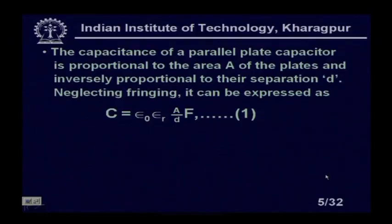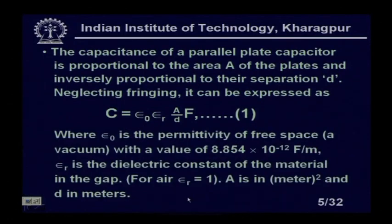C equals ε₀ × εᵣ × A / D Farads, where ε₀ is the permittivity of free space with a value of 8.854 × 10⁻¹² F/m. εᵣ is the dielectric constant of the material in the gap; for air, εᵣ equals 1. A is the area in square meters and D is the separation in meters.